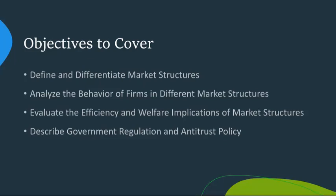Our second objective is to analyze the behavior of firms in different market structures. Understanding how these firms make decisions regarding pricing, output levels, and product quality is key. These behaviors affect consumers and the overall economy. For instance, firms in perfect competition are price takers, meaning they accept market prices. Monopolies, on the other hand, are price setters, allowing them to maximize profit by setting prices above marginal cost. Understanding these behaviors helps us understand market dynamics.